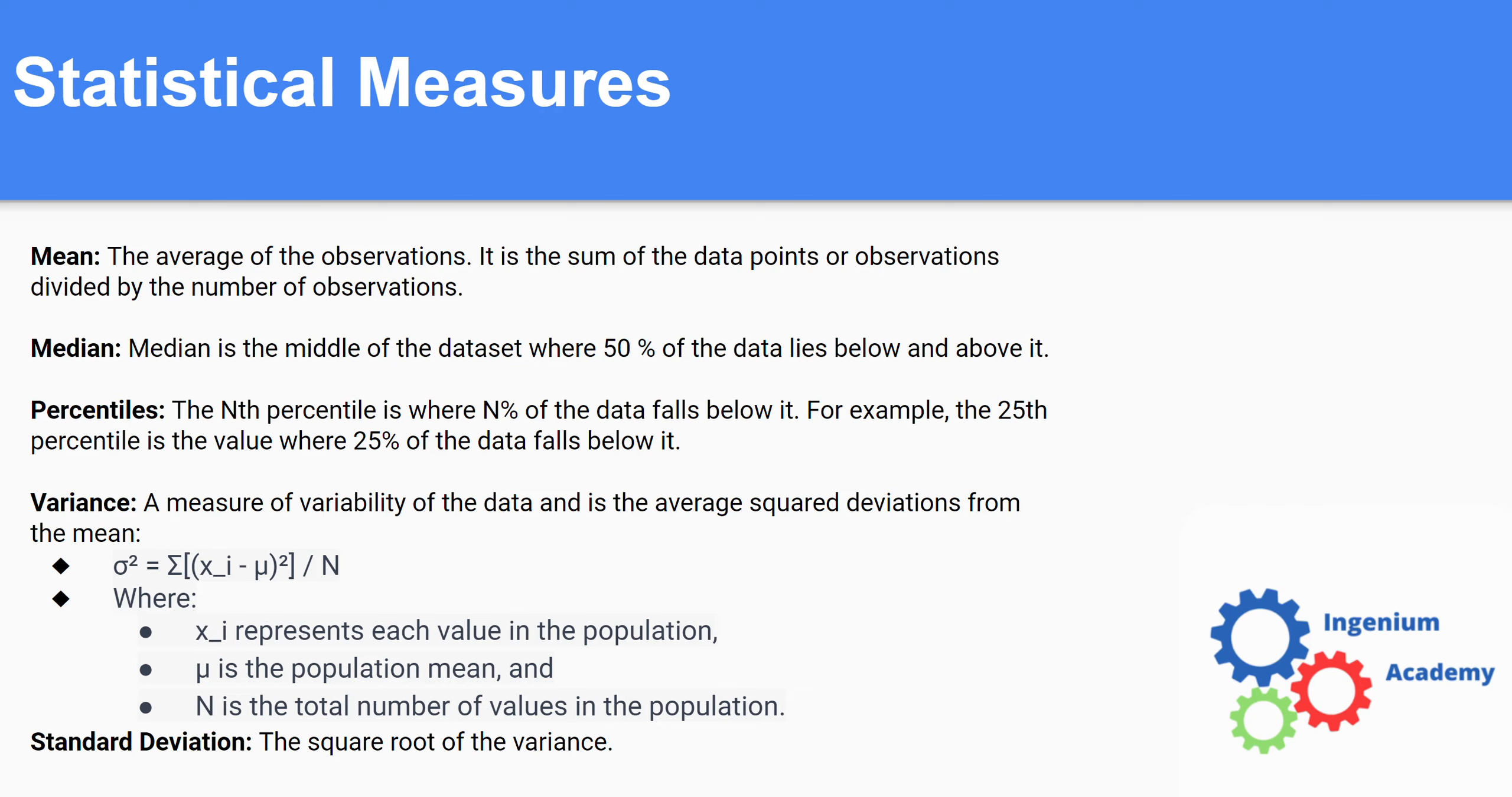But a percentile. So a percentile is where if I say I have, for example, the 25th percentile, if I say that this is a value, like a number, it could be any number, it just depends on the distribution that you're working with. It could be 2.75, whatever it is. It's the value where 25% of the data falls below it. Or you could also say 75% of the data falls above it.